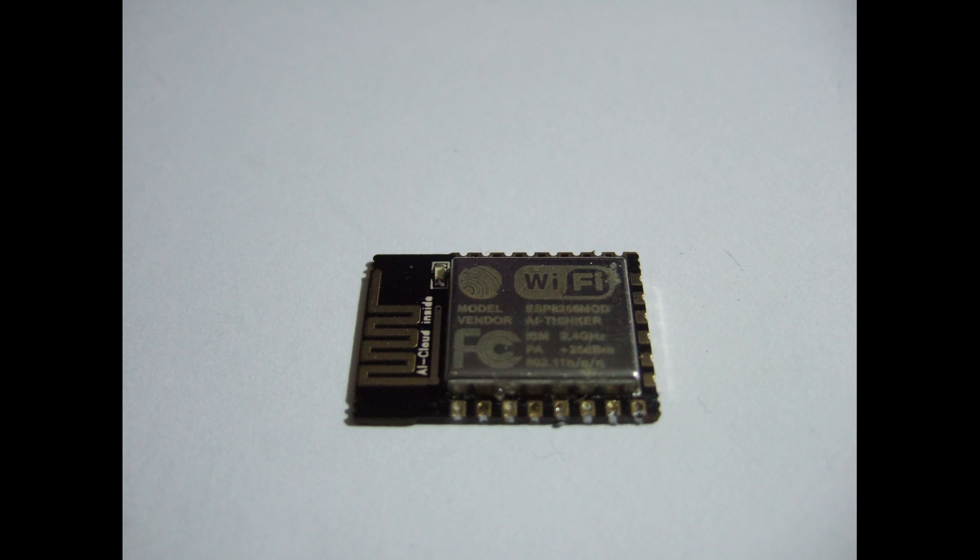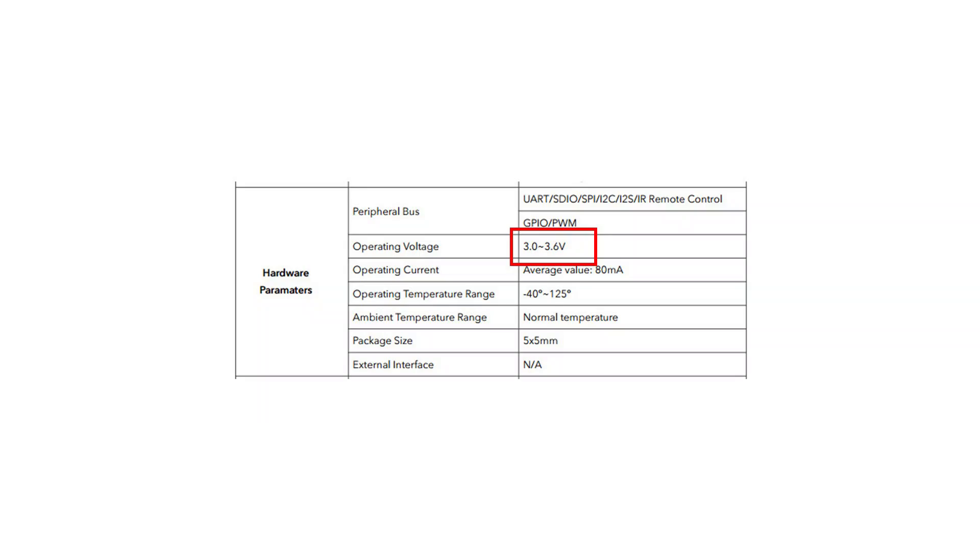Because we all love ESP8266, I use this chip as an example. According to the datasheet, ESP8266 modules have an operating voltage of 3 to 3.6V, which is about 3.3V plus and minus 10%. What kind of technologies do we have to fulfill these needs?